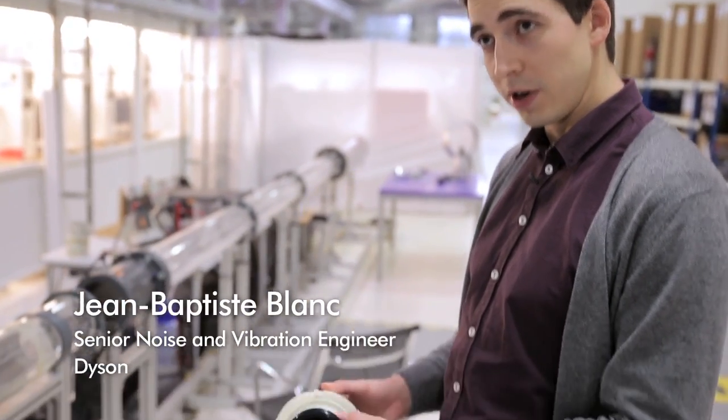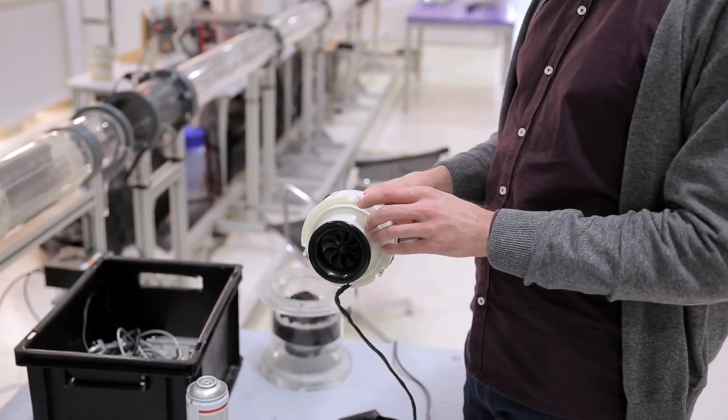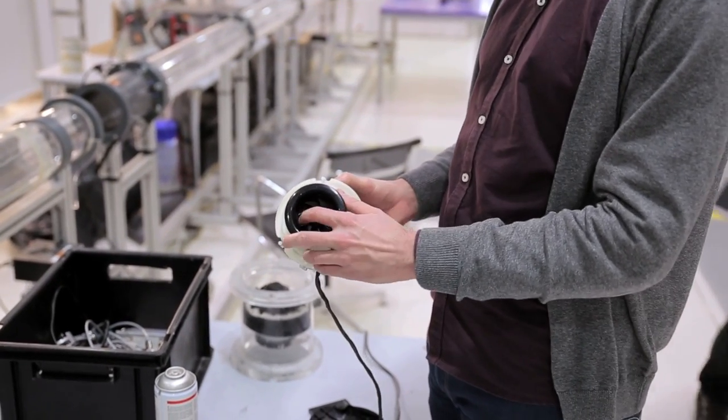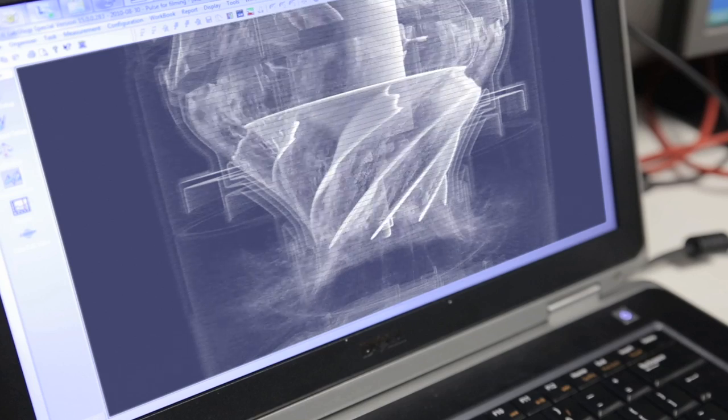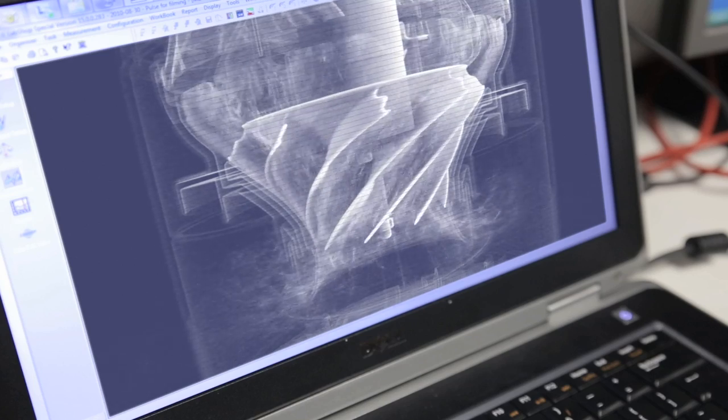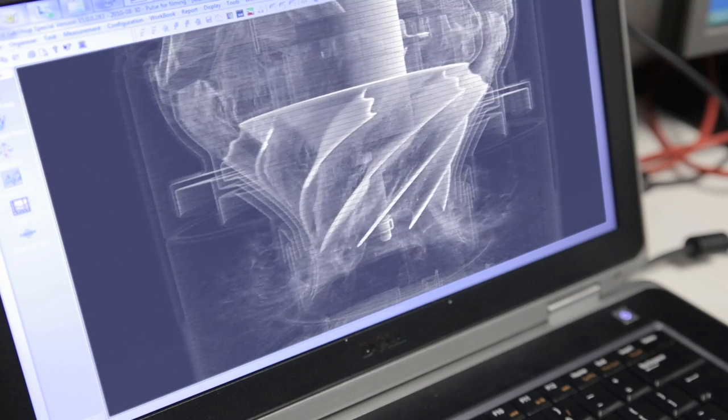This is the motor bucket that we designed to generate the primary airflow in a machine. It houses a brushless motor to which this impeller is connected here. The impeller is the part which is generating the airflow in the product when it is being spun by the motor.